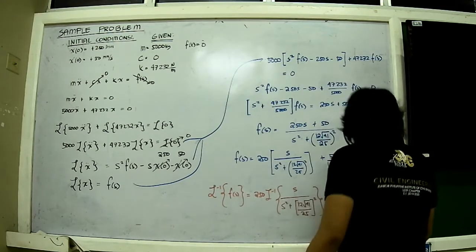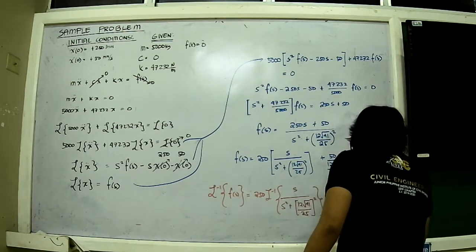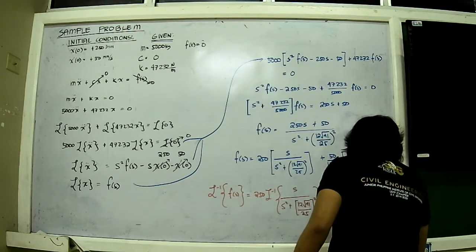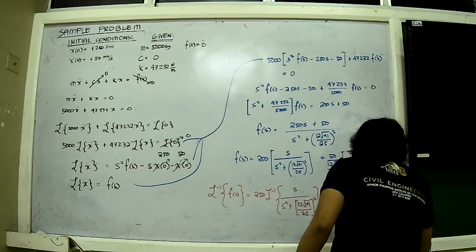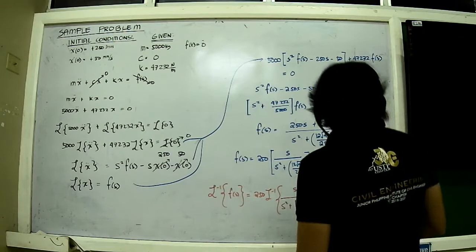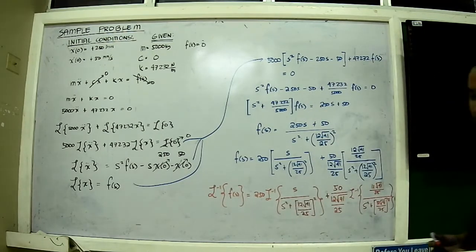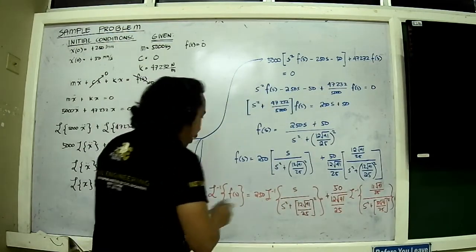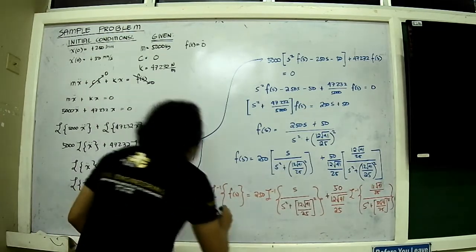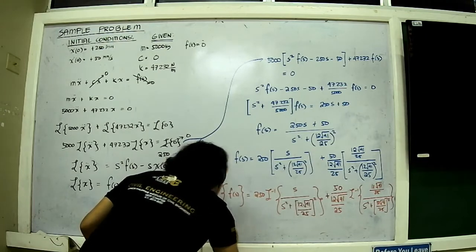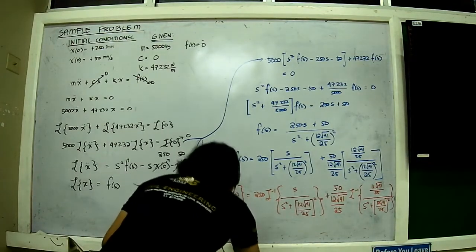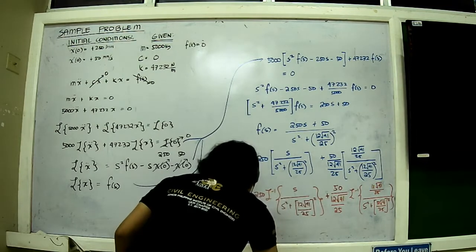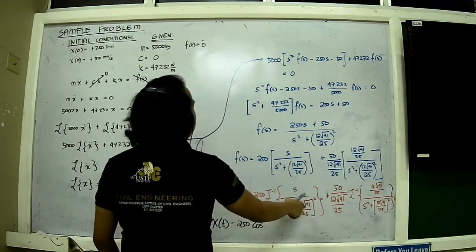Laplace transform is a very powerful method to solve differential equations. It is a mental exercise — if you don't practice, you won't get it. Going back to the original variable, this gives us x(t) equal to 250 cosine of approximately 3.07t.